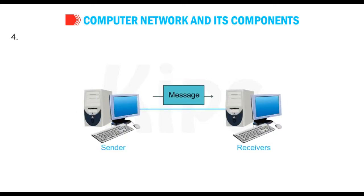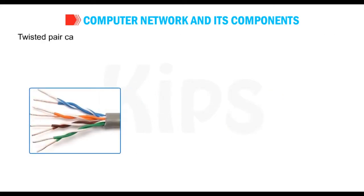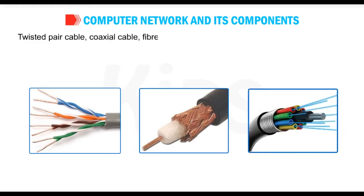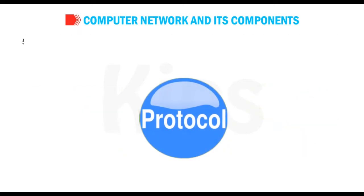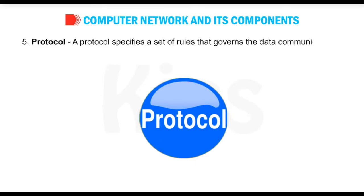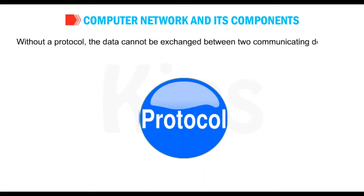Number 4: Transmission medium — it is the physical path through which the message travels from the sender to the receiver. Twisted pair cable, coaxial cable, fiber optic cable and radio waves are some common examples. Number 5: Protocol — a protocol specifies a set of rules that governs the data communication. Without a protocol, the data cannot be exchanged between two communicating devices.